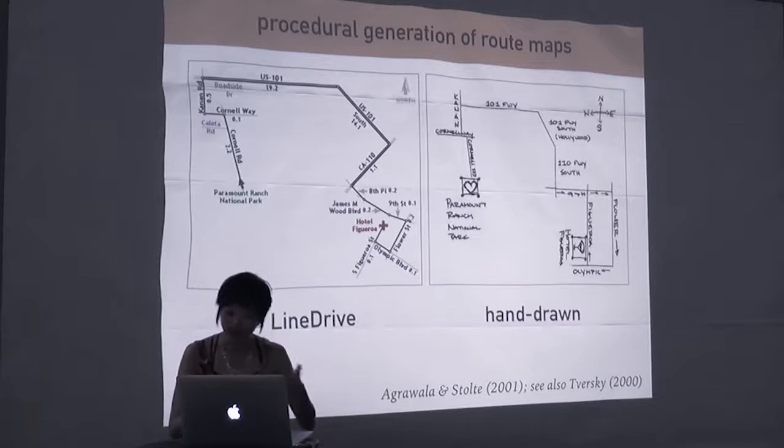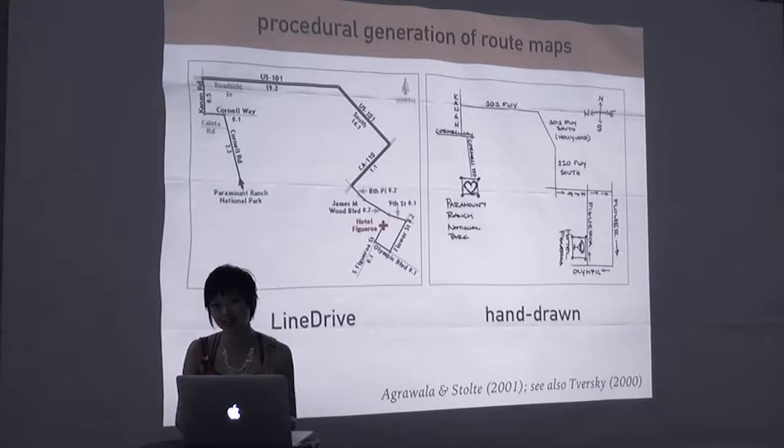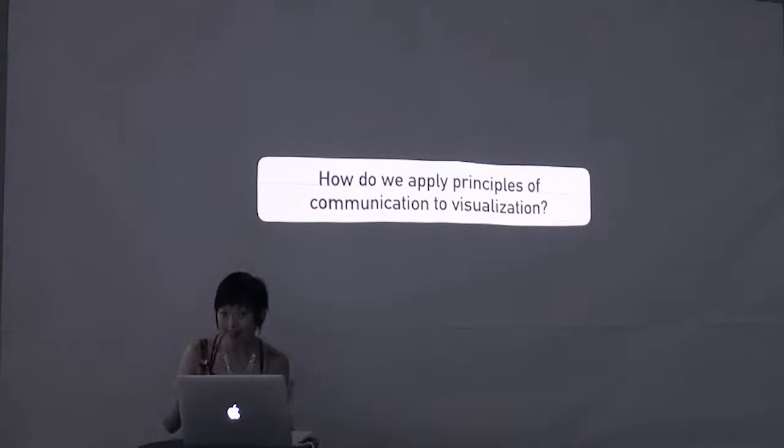While not strictly accurate, such maps are more legible because they better mirror how people think about routes. Starting with the line drive project in 2001, Maneesh Agrawala and colleagues have been developing algorithms that procedurally generate route maps that look much more like the kinds we might sketch to give to a friend. Thus, here's another very exciting frontier to my mind. How can we use communicative drawings to infer principles that govern how really informative visualizations work? Implementing these in software may make it easier to find what we're looking for, understand how something works, and get to where we need to go.